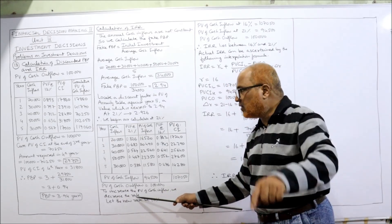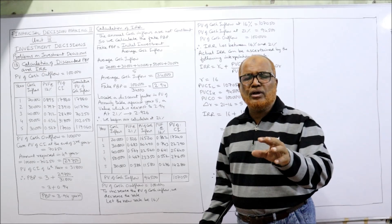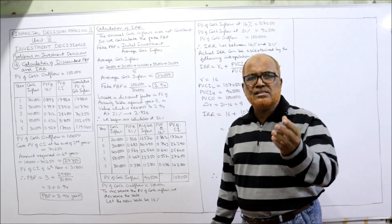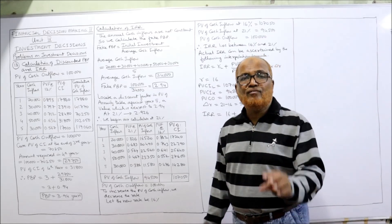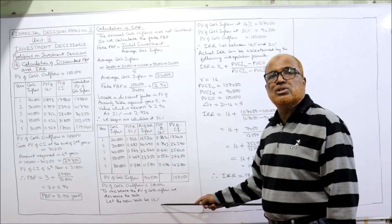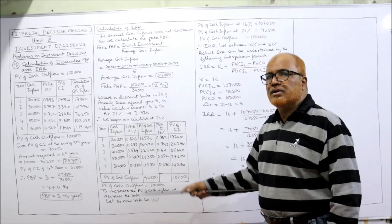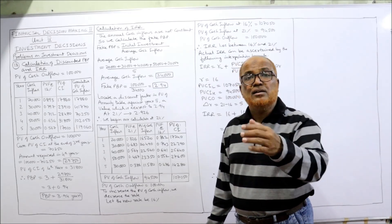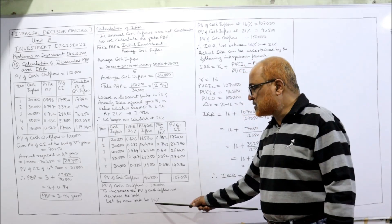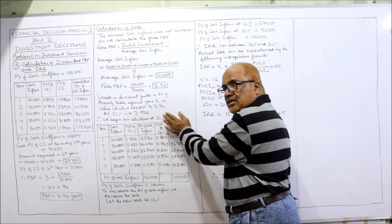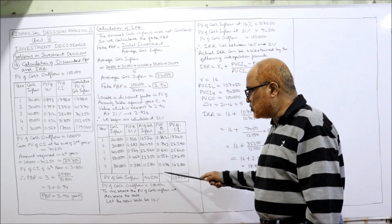We decrease the rate — earlier we used 21%, now we arbitrarily try 16%. You can take 17% or 15% too — if the difference is more, take a larger gap; if less, take a smaller gap. Here the difference is 1,00,000 − 94,500 = 5,500, so I reduced by 5%, from 21% to 16%. It's not compulsory — you can reduce by 2% and try 18% or 19% using trial and error.